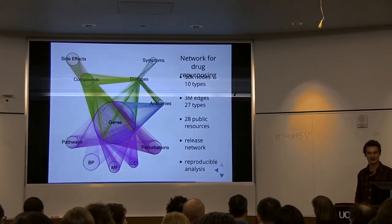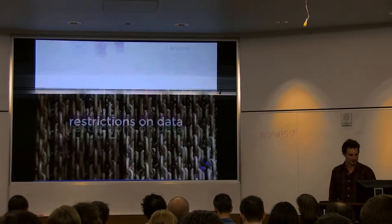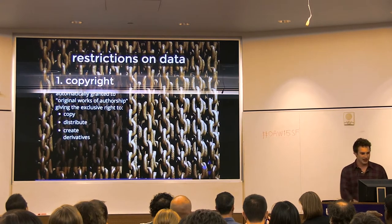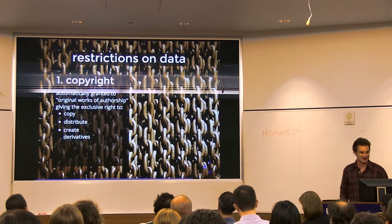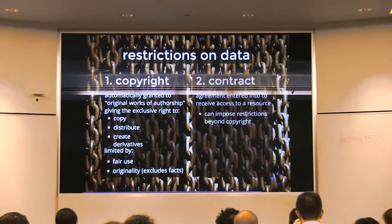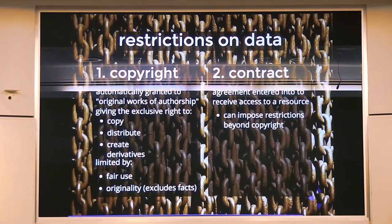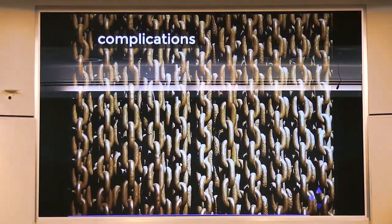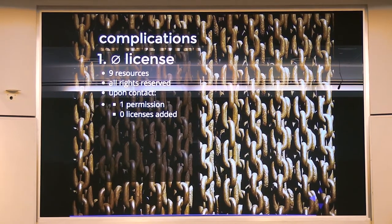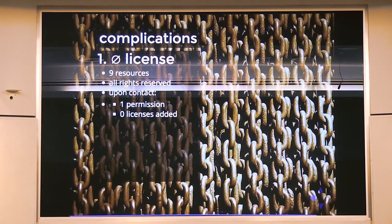We want to make the analysis reproducible, which means releasing the data along every stage of the analysis. But there's a problem — right now there are a lot of restrictions on how you can use data. The first is copyright, which is automatically granted to original works of authorship, giving exclusive rights. An additional restriction is a contract — some resources require you to enter into a contract just to get access. Specifically, we faced these complications: nine resources didn't post any license, which means all rights are reserved — you cannot copy or redistribute, and contacting them has not been effective.